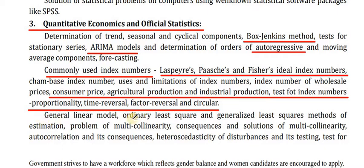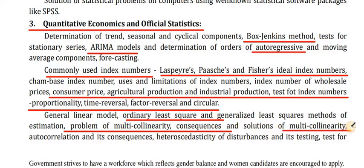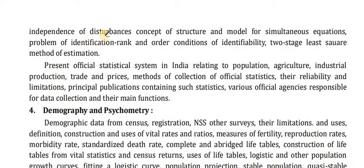The General Linear Model, Ordinary Least Squares and Generalized Least Squares methods of estimation, Problem of Multicollinearity — consequences and solutions, Autocorrelation and its consequences, Heteroscedasticity of disturbances and tests for independence of disturbances, Concept of structural and reduced form equations, Estimation problems of identification — rank and order conditions of identifiability, Two-Stage Least Squares method of estimation.